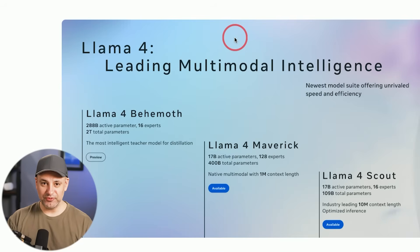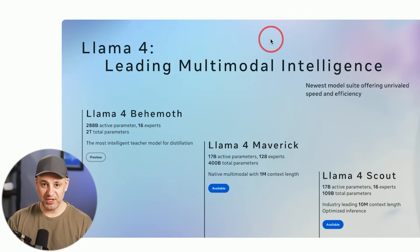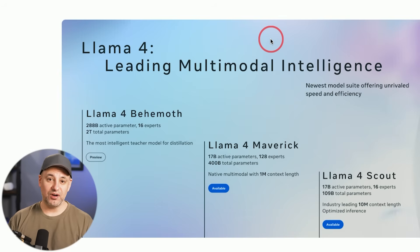Meta recently released Llama 4, their new open source large language model. It's a family of three and it's available right now. I partnered with Meta for this video to give you the breakdown of all the different versions of Llama 4 and what they have to offer. Later in the video, I'll show you websites where you can try it for free, and I'll show you how to download it if you're a developer who wants to play around with Llama 4 for your applications.